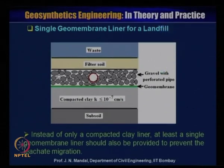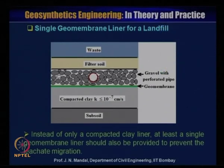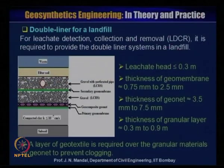For a single geomembrane liner landfill: this is the subsoil, this is the compacted clay liner with hydraulic conductivity ≤ 10⁻⁷ cm/s, and then you introduce a layer of geomembrane. This is the single geomembrane liner, then gravel and perforated pipe, then filter soil and waste. Instead of only a compacted clay liner, at least a single geomembrane liner should also be provided to prevent leachate migration. This one-layer or maximum double-layer geomembrane system is much more suitable for Indian conditions in terms of cost.